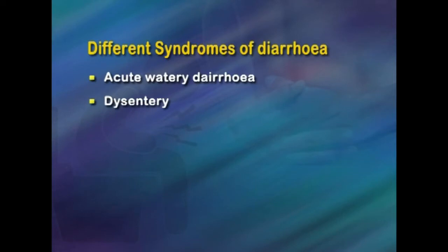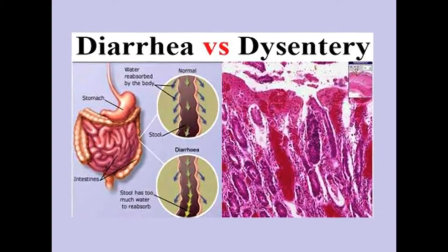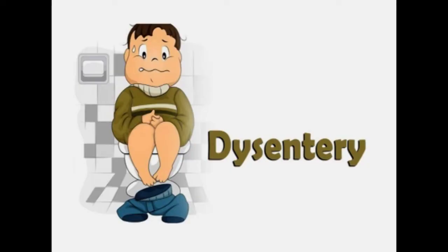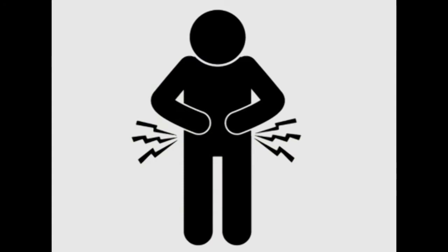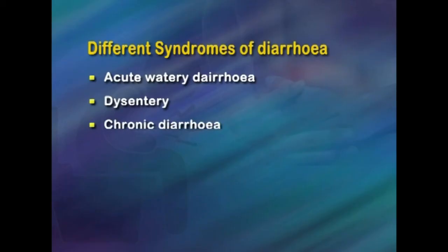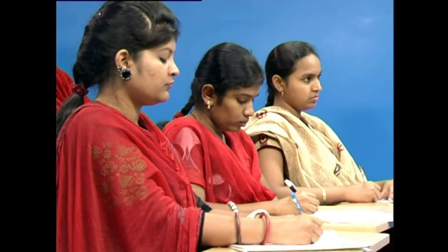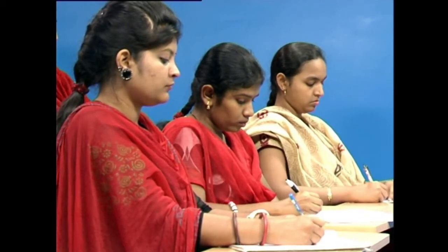The next category is dysentery, which is the term used for diarrhea with visible blood. Dysentery may also be associated with fever and severe cramps in the stomach — a condition called tenesmus, where upon defecating the person experiences severe cramps in the lower abdomen or navel area. Then we have chronic diarrhea: recurrent or long-lasting diarrhea due to non-infectious causes such as sensitivity to gluten or inherited metabolic disorders.